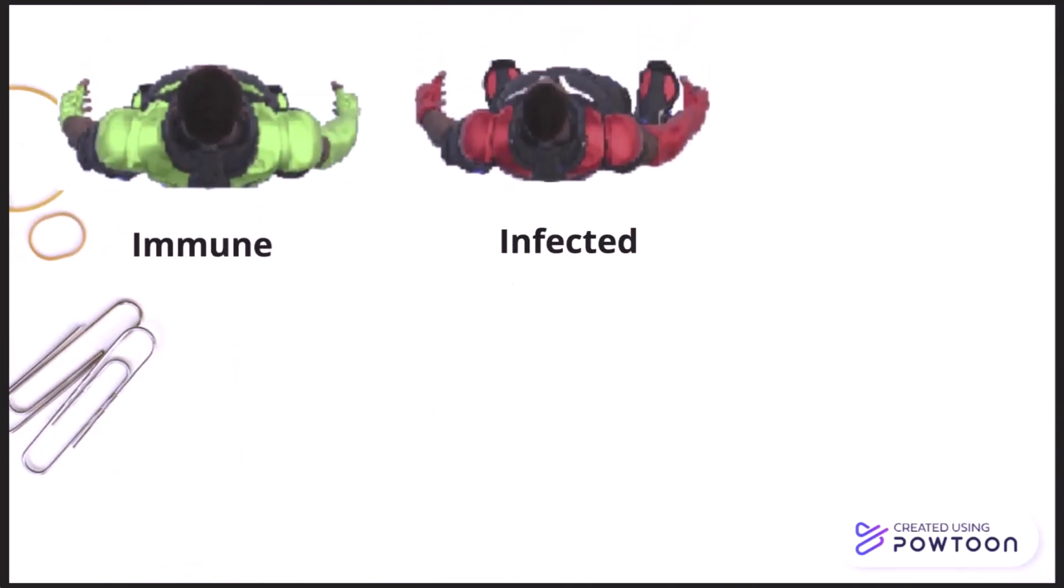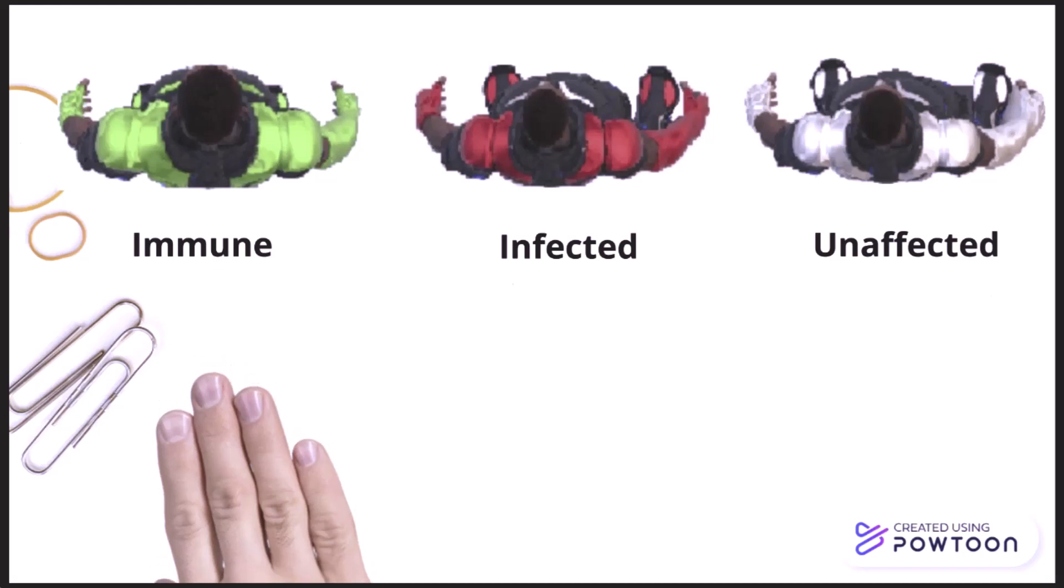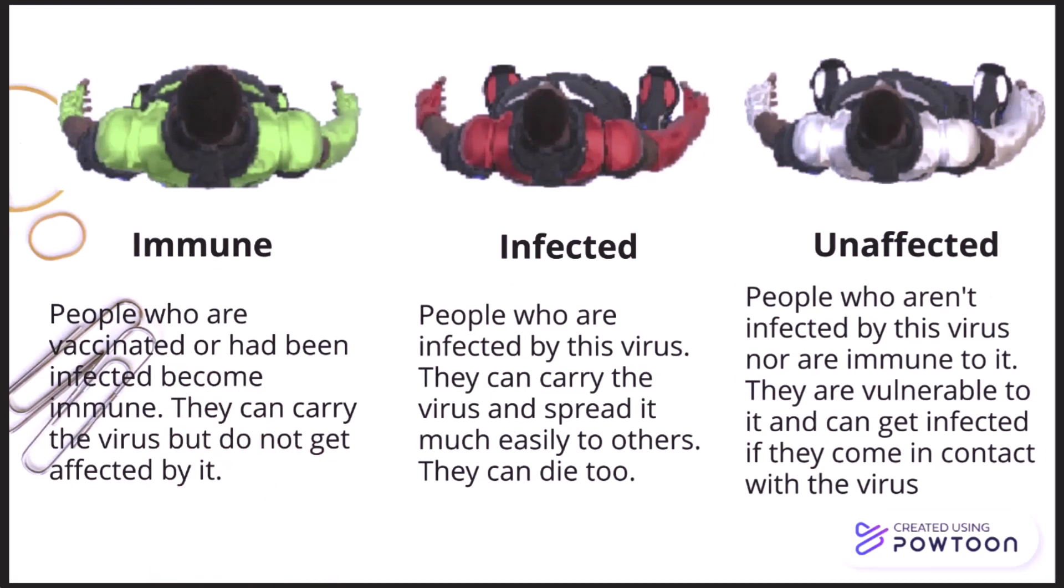We have three types of people in our simulation: immune, infected, and unaffected. People who are vaccinated or have been infected become immune. They can carry the virus but do not get affected by it.